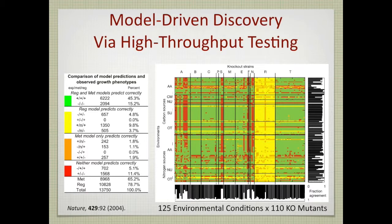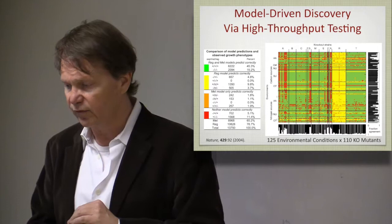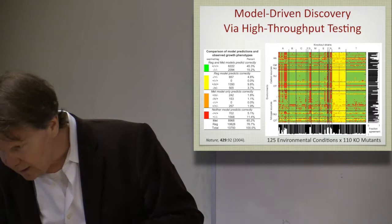Then you have the measured data that says no growth, no growth of the knockout strains under these conditions. And you can compute it, you can overlay the two. And this is just a binary comparison. And if they agree, you color the entry in the table green. If they disagree, you color it red. And then these yellow dots have to do with addition of regulatory events that I'm not going to describe here.